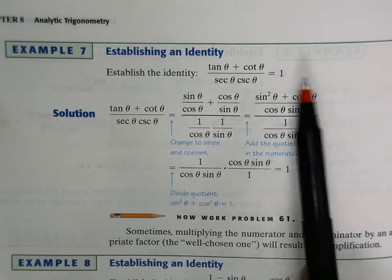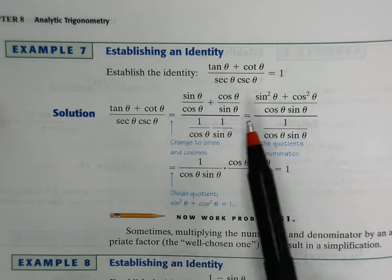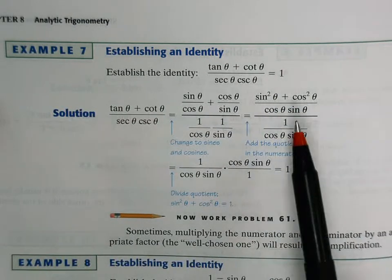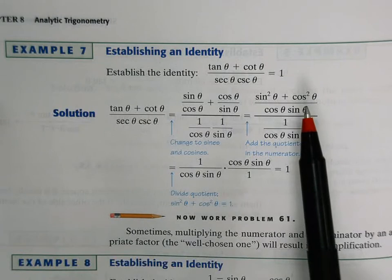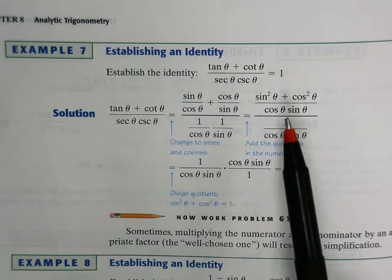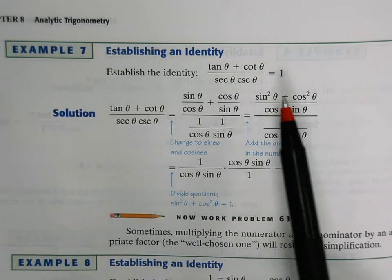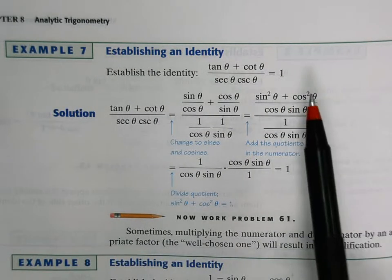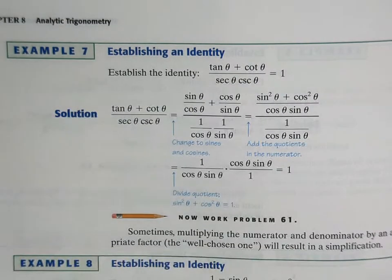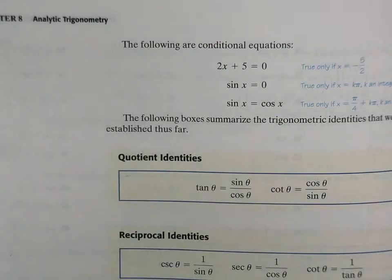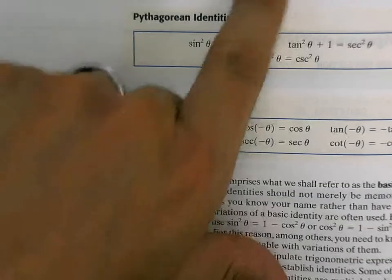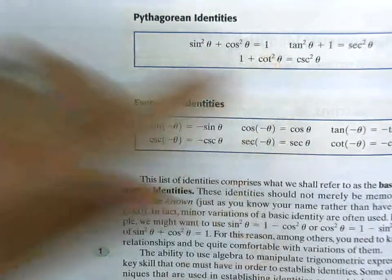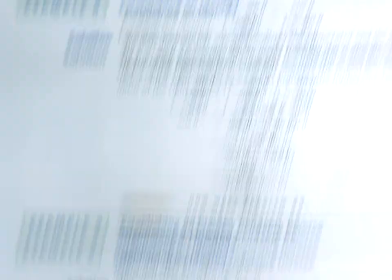Now think: I have a big fraction and I'm dividing it by another fraction. But even before that — sine squared theta plus cosine squared theta is one of our Pythagorean identities, the main one. Sine squared theta plus cosine squared theta is equal to one.